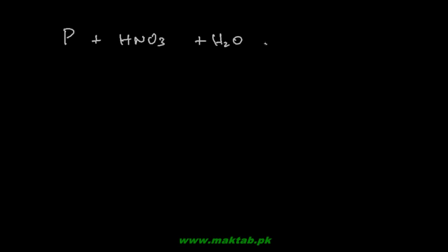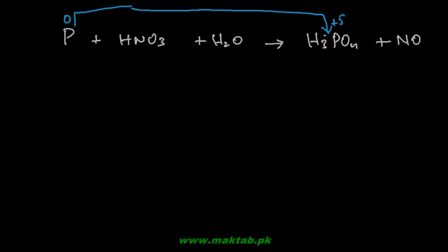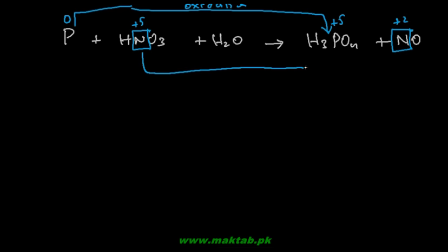So to summarize: Phosphorus plus HNO3 plus water gives H3PO4 plus nitric oxide. Phosphorus charge here is 0 and here is +5 — this is oxidation. Nitrogen is +5 in HNO3 and +2 in NO — this is reduction. Increasing charge means oxidation; decreasing charge means reduction.